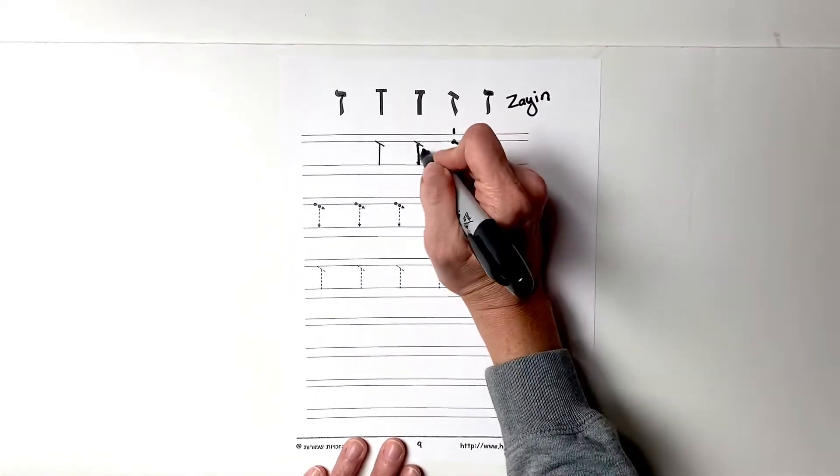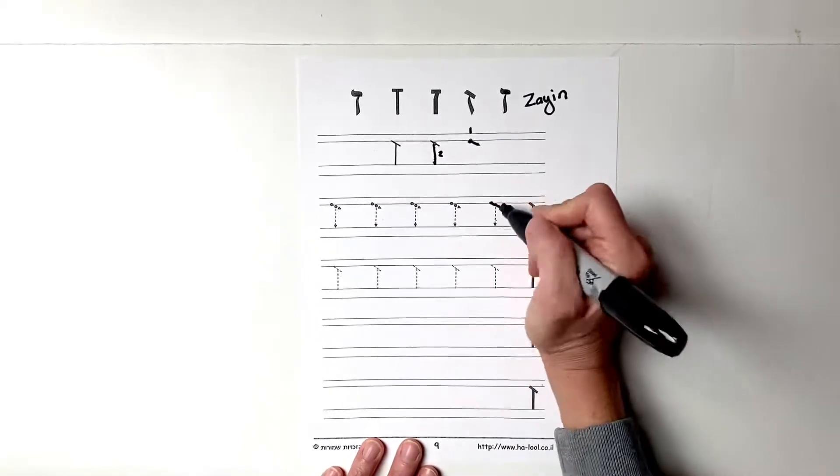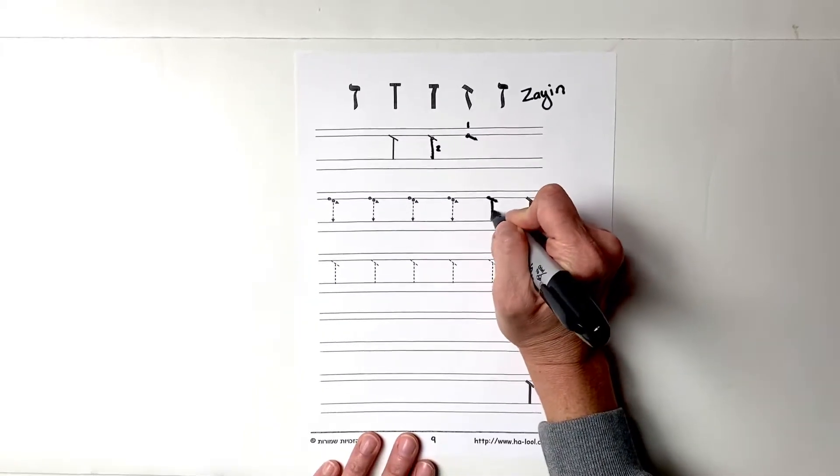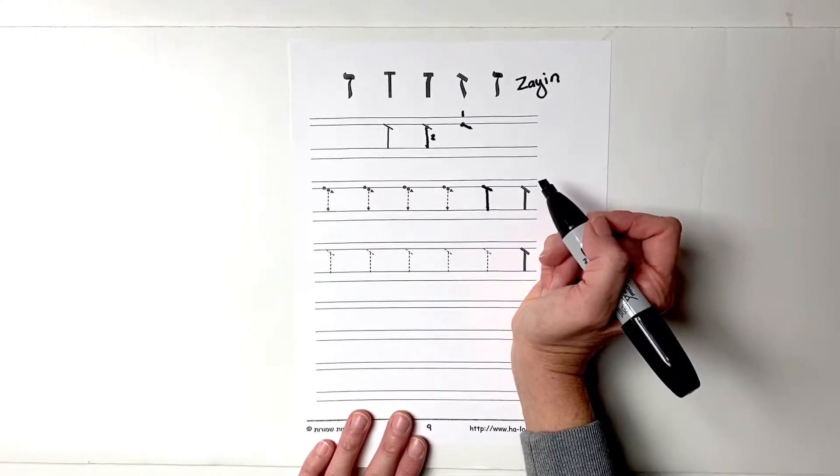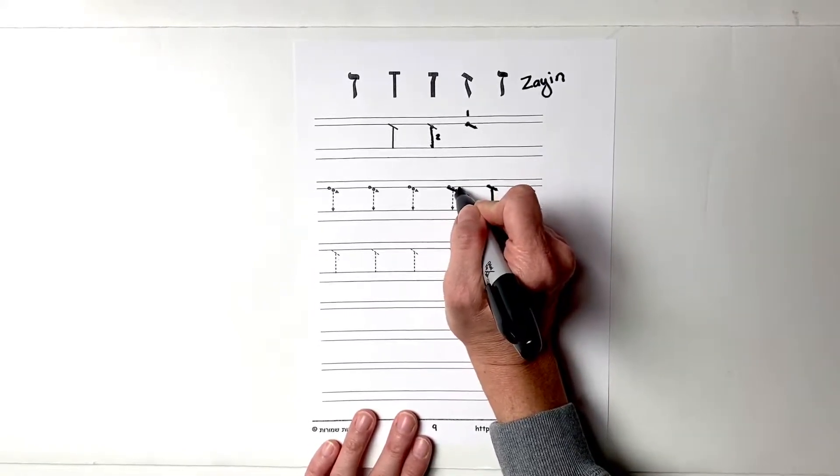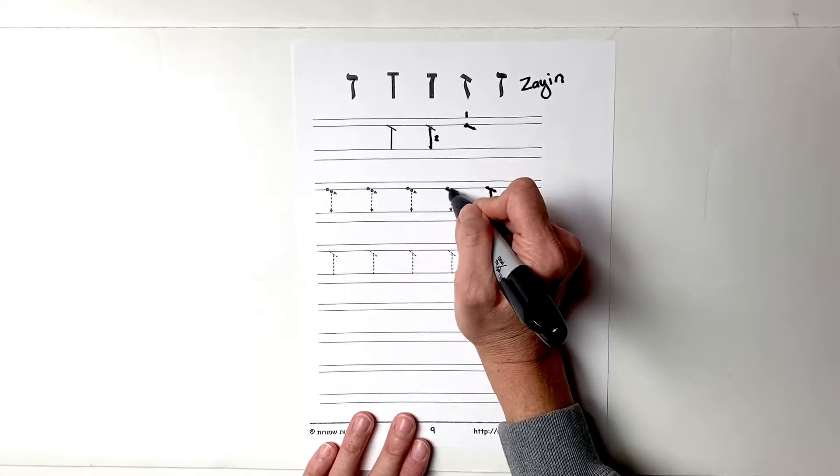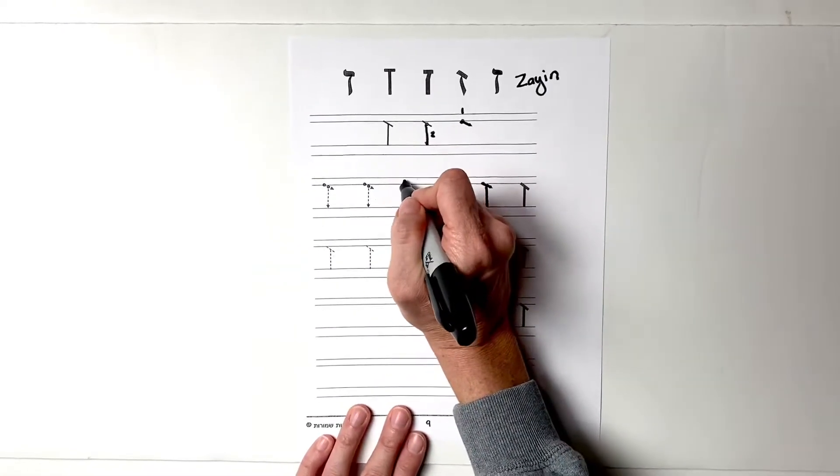So now drop back down to the next line and practice that. Step one, a little bit of an angle. Step two, down. It's the seventh letter and it does look almost like a seven, but make sure that this is at an angle. You wouldn't do that for the number seven, but it does look somewhat like a seven for the seventh letter.